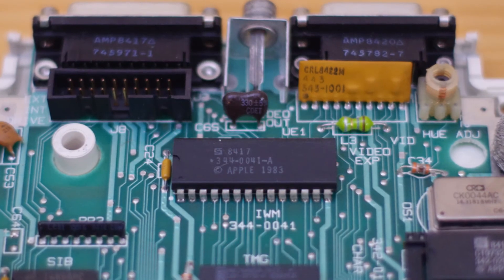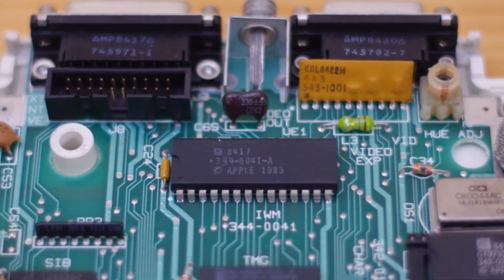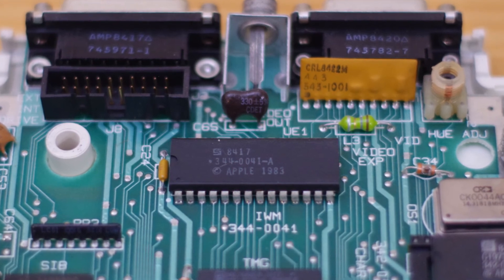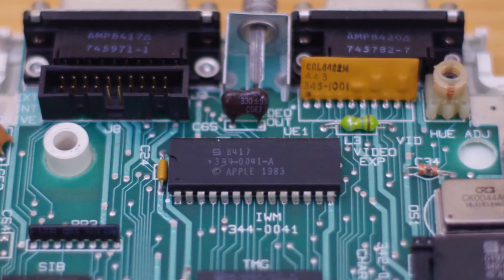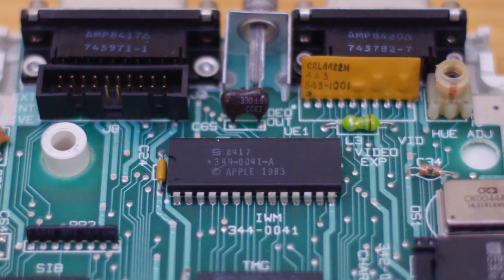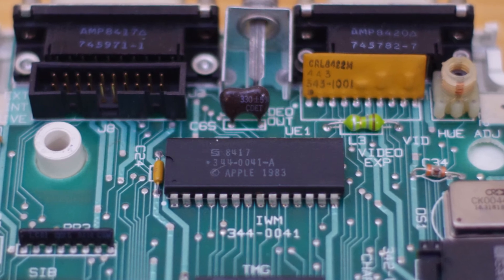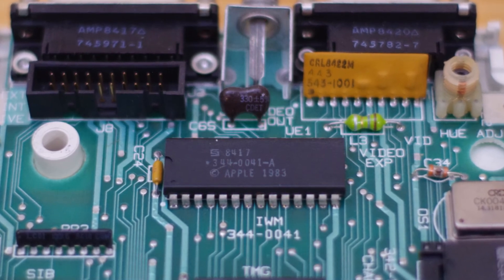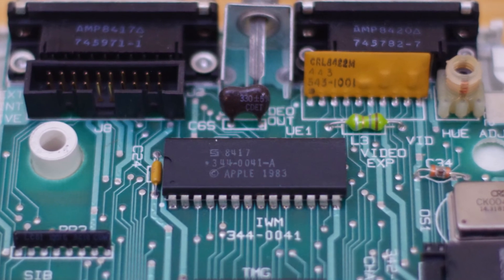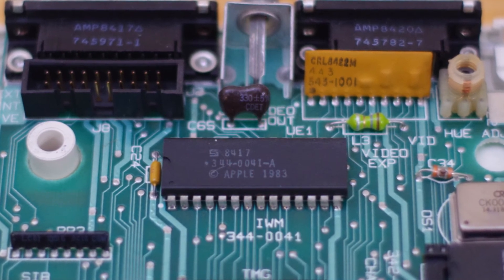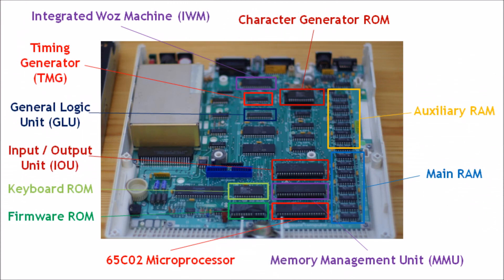And finally, the integrated WOZ machine, named after Steve Wozniak, which is a single-chip version of the Apple Disk 2 controller card. Here is another look at the diagram showing the locations of these integrated circuits in the Apple IIc.